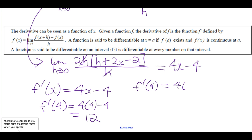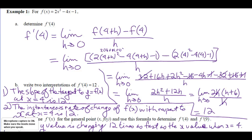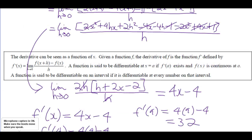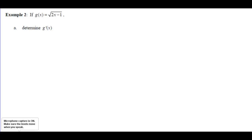So f prime at x = 4x - 4, which means f prime of 4 = 12, confirming our earlier result. And f prime of 9 = 32. Observation: the original function has degree 2, and the derivative has degree 1. The derivative can be seen as a function of x — this process of using the limit formula is called differentiation by first principles.